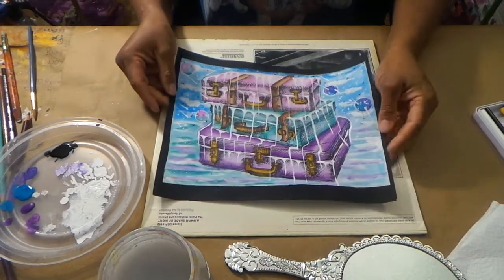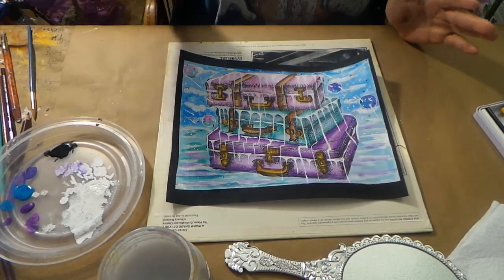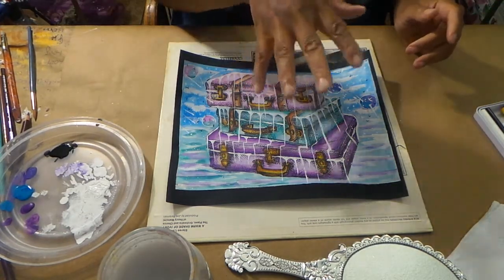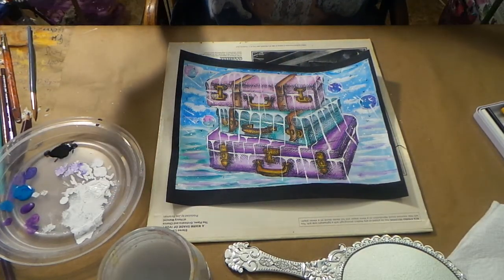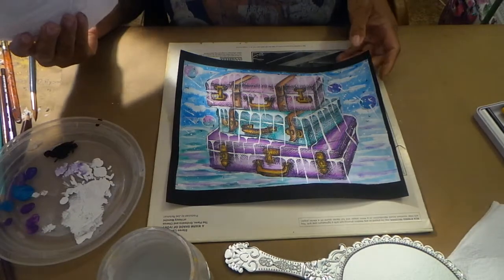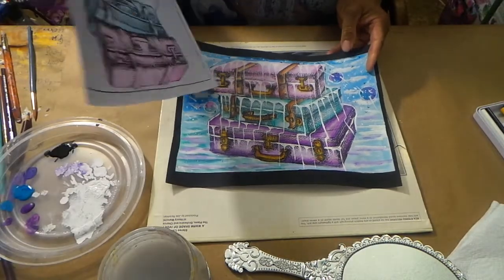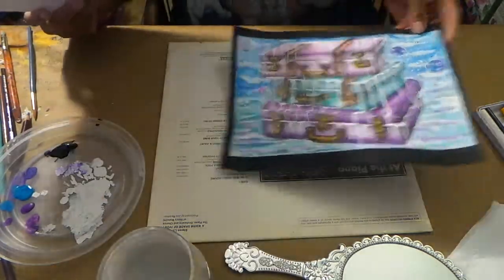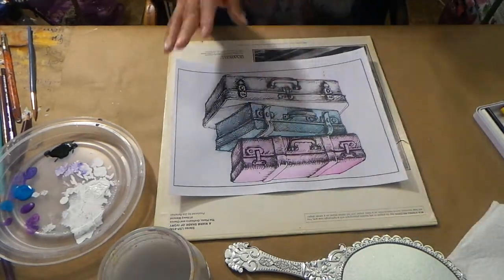This is what we're going to be going for. I don't have time in an hour to do this whole page because this took me way longer than an hour. But I can go through and show you different parts of how I did this so that if you like any of the techniques I'm doing, you can use some of the same techniques. I'll show you how I colored and shaded the suitcases, how I did the water, how I did the sky. So it won't be a complete beginning to end, but you'll know the different techniques I use.